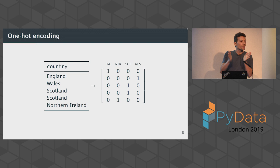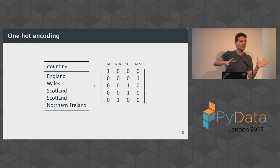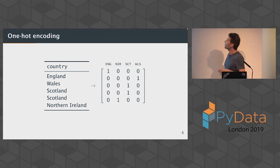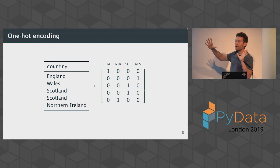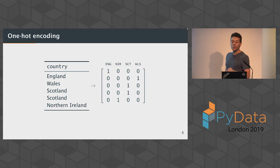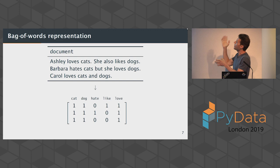Imagine you have a data frame with a country column containing the four countries of the UK — England, Wales, Scotland, Northern Ireland. From one column in your data frame, you end up with four columns. You'd probably exclude one to avoid full correlation. But if country contained all 200 countries in the world, suddenly from one predictor you end up with 200 features that you then need to train your model on.